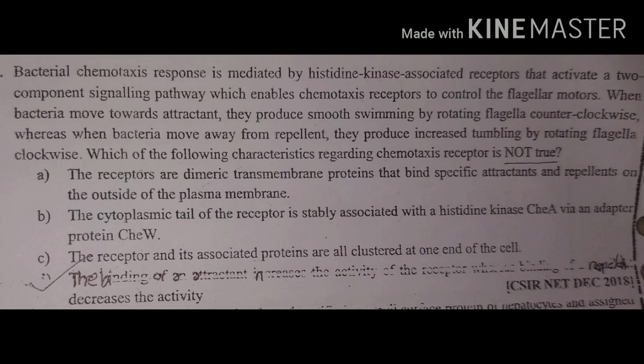Option D states that binding of an attractant increases the activity of the receptor, whereas binding of a repellent does not increase or decrease its activity. This is not entirely accurate — the key function is that binding rotates the flagella clockwise or counterclockwise to move the bacterium forward or backward. Thanks for watching. If this was helpful, please subscribe to the channel for more updates.